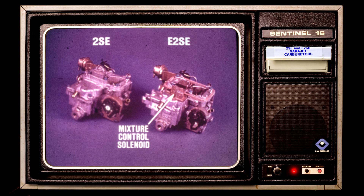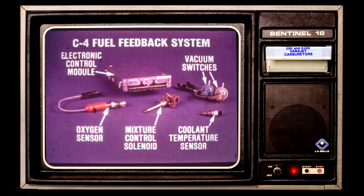The important difference between these carburetors is that the E2SE is used on California vehicles equipped with a new fuel feedback system. Part of that system is the mixture control solenoid. The 2SE does not utilize a mixture control solenoid.